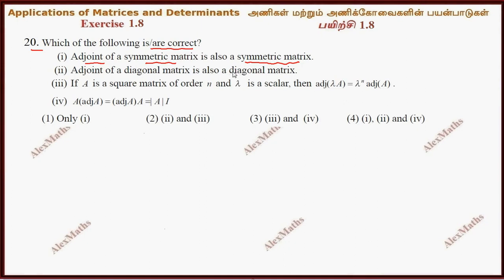So if we look at one example, the adjoint will be same. So this is true. Adjoint of a diagonal matrix is a diagonal matrix. This is true.